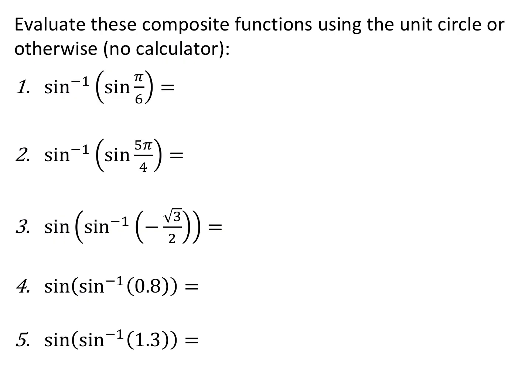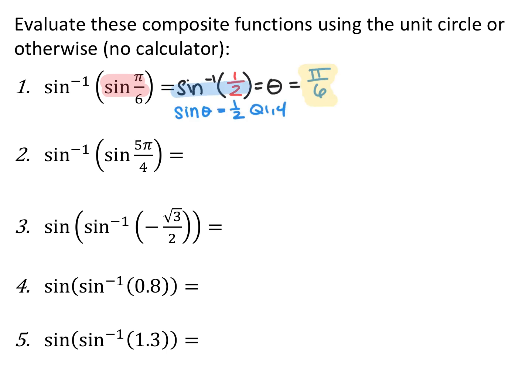We can compose trig functions with inverse trig functions. Always work from the inside out. For sine inverse of sine of pi over 6: first, sine of pi over 6 is 1 half. Then sine inverse of 1 half asks what angle in quadrants 1 and 4 has sine equal to 1 half — that's pi over 6. Notice the sine inverse and sine canceled each other out because pi over 6 is in the range of sine inverse, so it's a valid output.